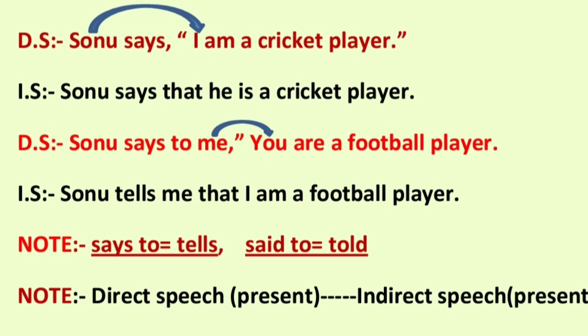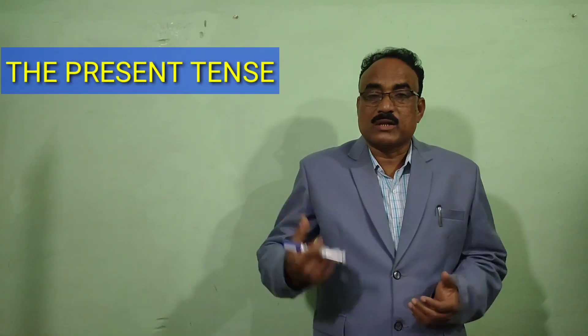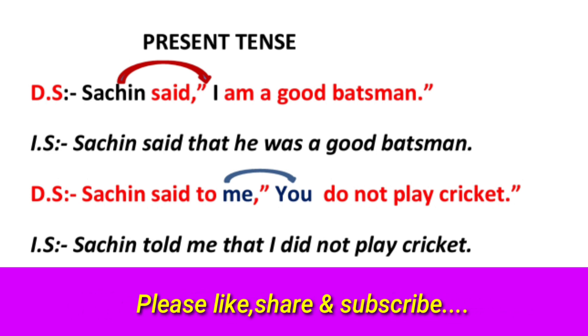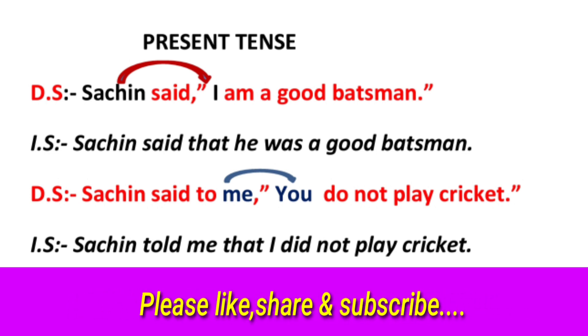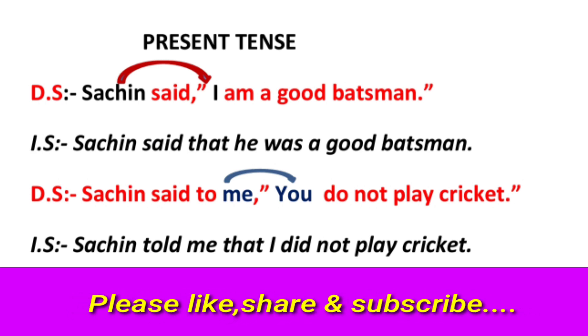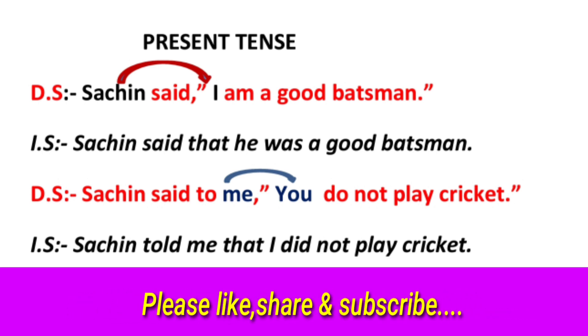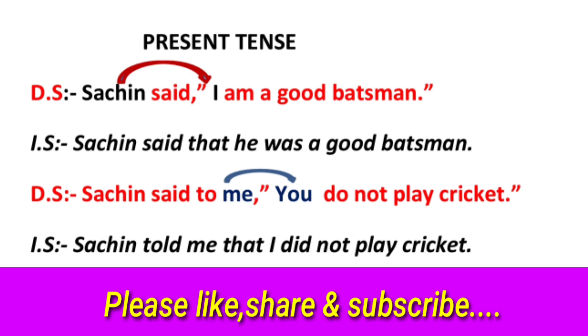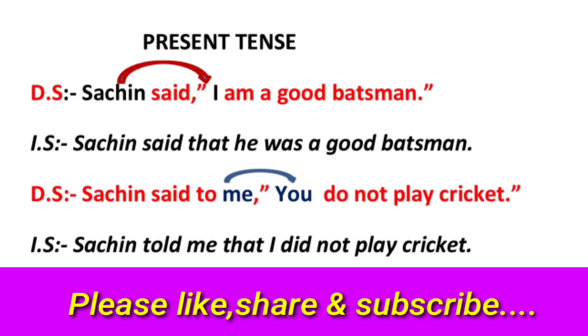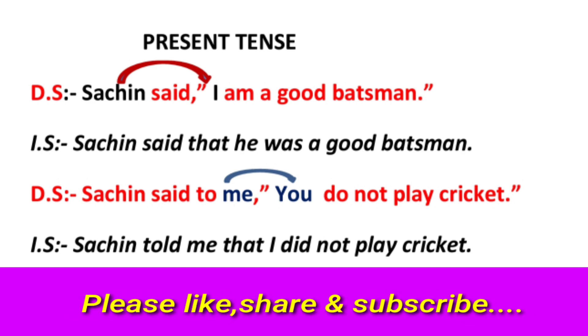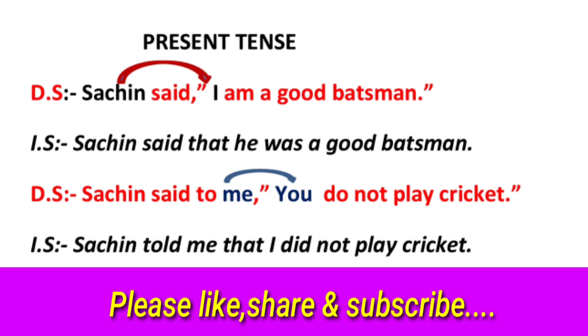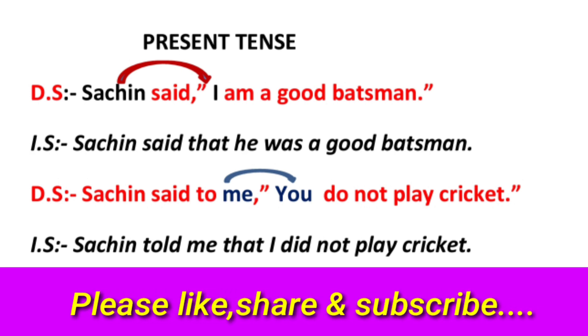Note: another important note — in direct speech, when you see that the reporting verb is present, the reported speech must be in present. Look at another example: the present tense. Look at the speech: Sachin said, 'I am a good batsman.' In indirect speech: 'Sachin said that he was a good batsman.' 'I' refers to Sachin, so it changes to 'he'. The reported speech is present, but the reporting verb is past — so the reported speech changes into past in indirect speech.